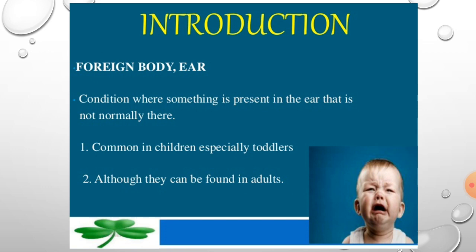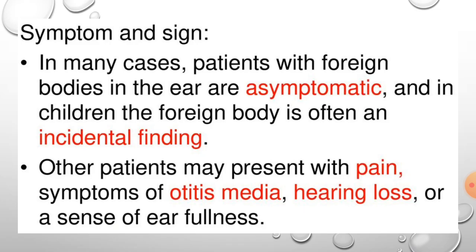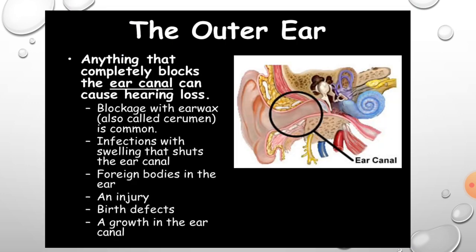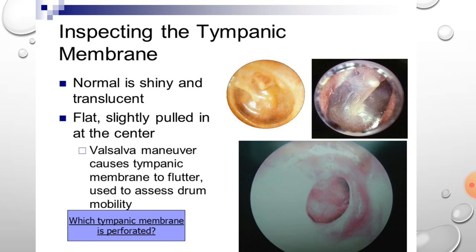Foreign body ear refers to conditions where something not normally present is found in the ear; it is common in children, especially toddlers, though it can occur in adults. Patients with foreign bodies are often asymptomatic; in children it is often an incidental finding. Foreign bodies can include insects or impacted wax, which collects and causes partial deafness by blocking the external auditory canal partially or completely.